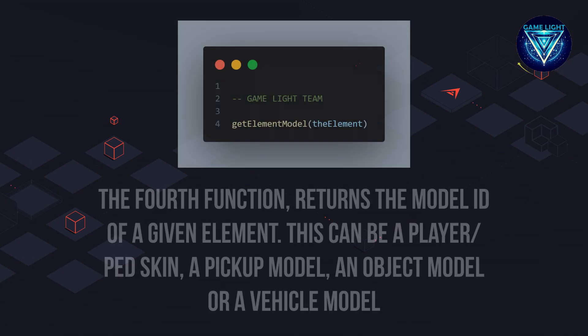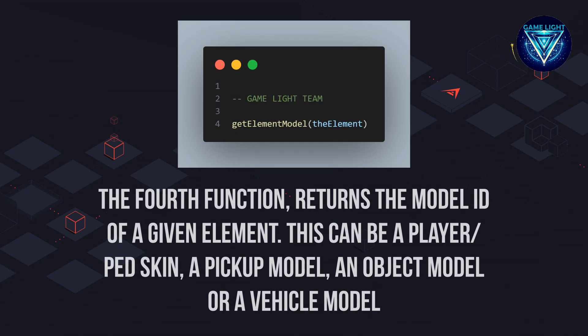The fourth function returns the model ID of a given element. This can be a player, a PED skin, a pickup model, an object model, or a vehicle model.